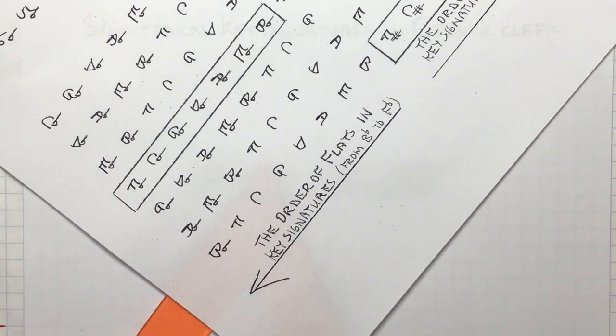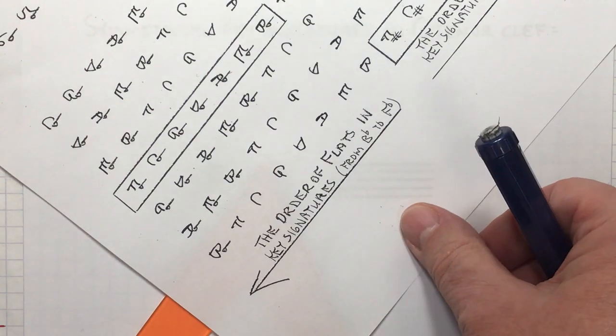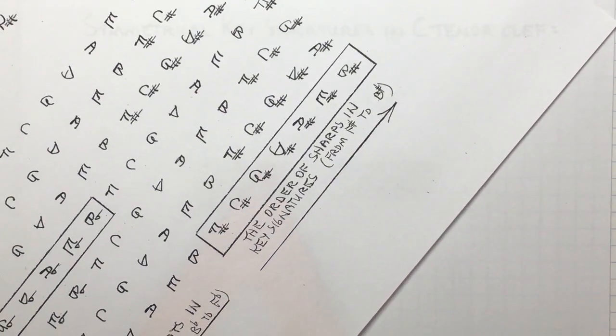In videos 16 and 17 we used our major scale chart to show the order of flats and sharps in key signatures.